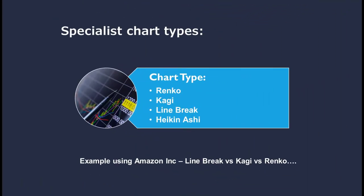Most people have traditionally seen these chart types as exotic or specialist, and they haven't been widely used due to lack of knowledge and charting package support. I'd package Renko, Kagi, line break, and Heiken Ashi together as specialist chart types. There are also indicators and tools from Japan like ichimoku and candlesticks, but I want to focus on Renko, Kagi, and line break because they're three of the most similar types giving different information. Let's look at Amazon Inc with all three charts — same time period, same data — and see what different results we get.